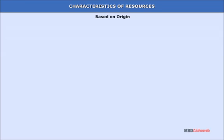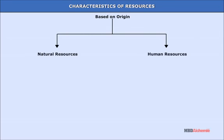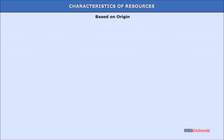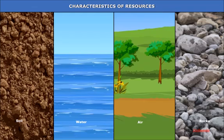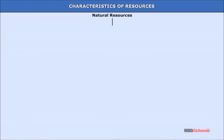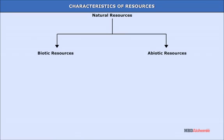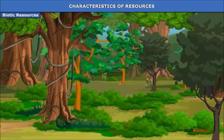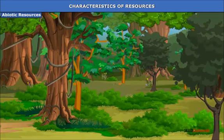Based on origin, resources can be classified into natural and human resources. Natural resources are the gifts of nature which are found useful for making the life of human beings comfortable and worth living. Natural resources include natural vegetation, soil, water, air, minerals and even rocks. These can be of two main types: biotic and abiotic. Biotic resources are living resources like forests and forest products, agriculture, animals, birds, and marine life. Abiotic resources are non-living things — examples are minerals like iron ore, copper, land resources, and soils.